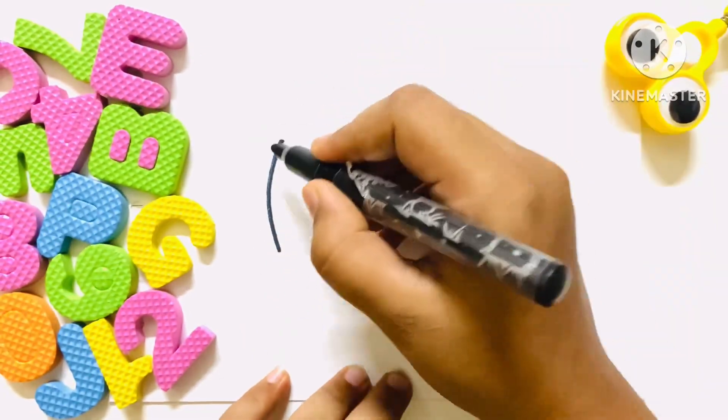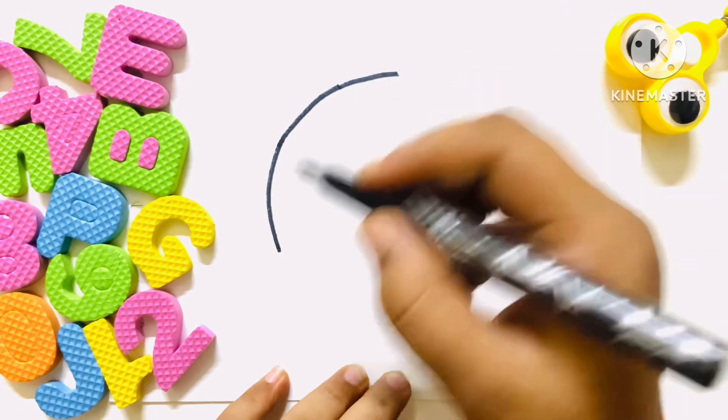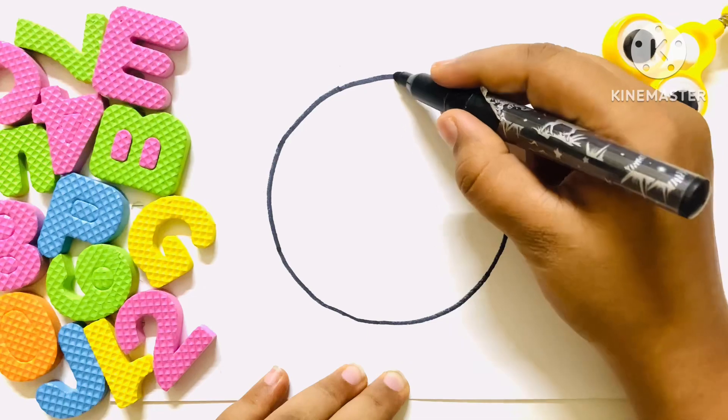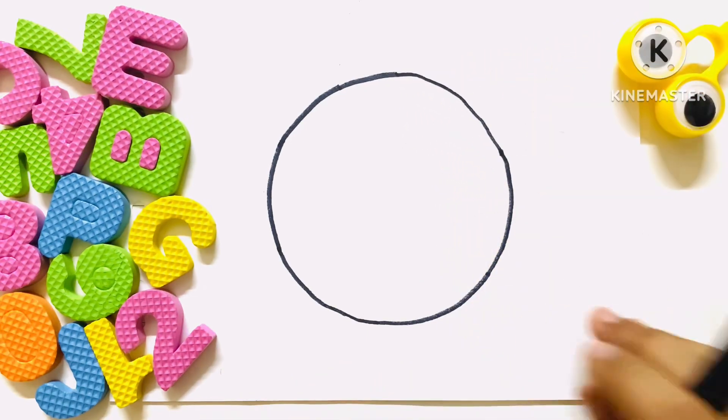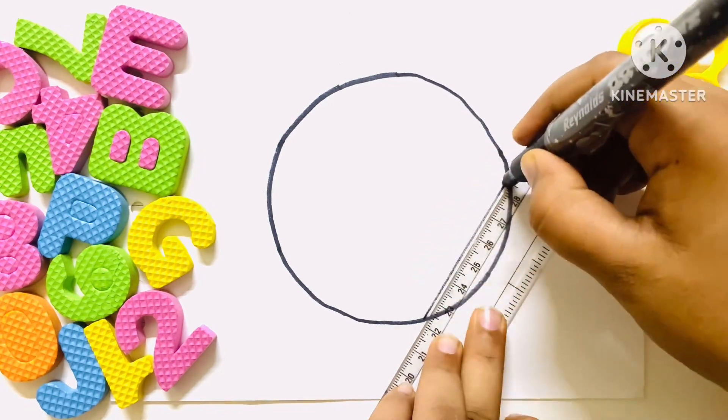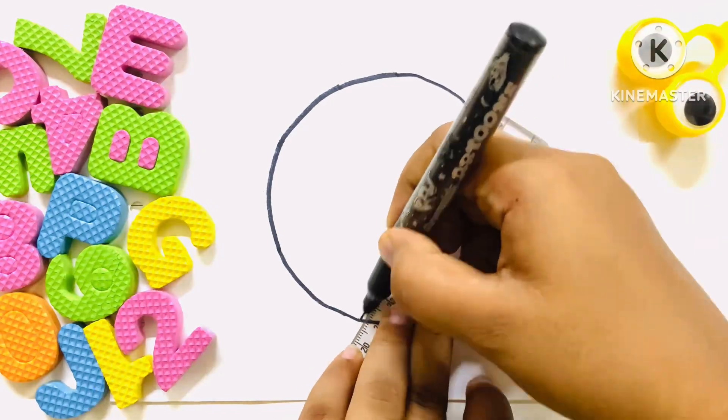Let's draw a circle. It's a big circle. Now draw lines on the circle with the help of ruler.